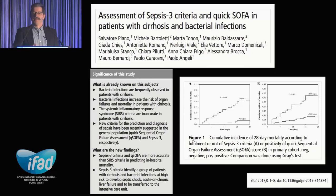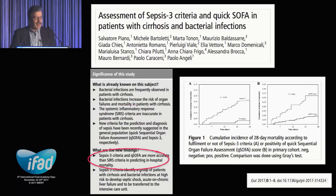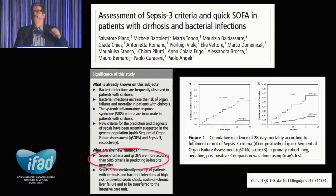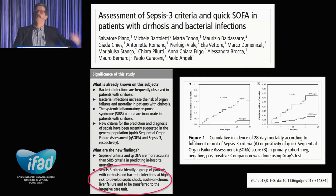For specific groups, a study from Italy looking at cirrhosis made the point that SIRS criteria isn't particularly useful in that population, and they found quick SOFA and SOFA were more useful, especially in identifying cirrhotic patients with bacterial infections who would go on to do badly.